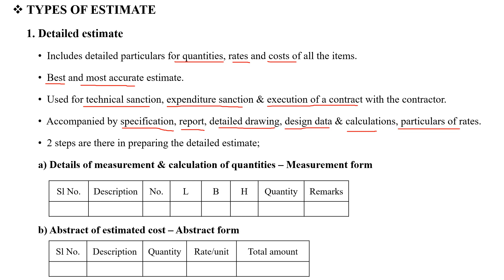We will use 2 steps to prepare this detailed estimate. Step 1: Details of measurement and calculation of quantities. This includes the measurement formula, serial numbers, details of the total numbers, length, breadth, height, quantity, and remarks.